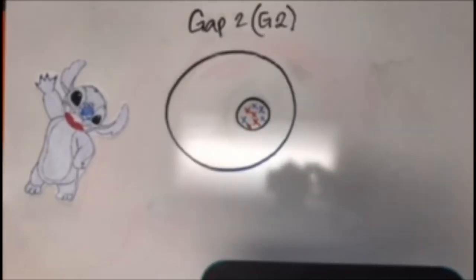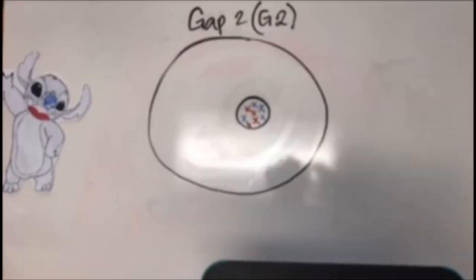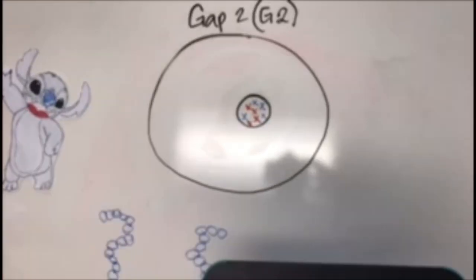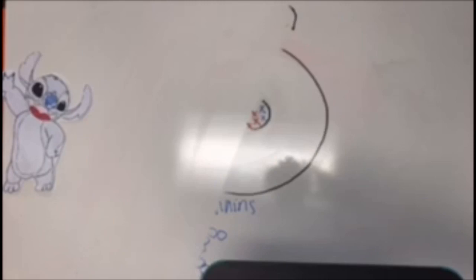The next and last stage of interphase is gap two, or G2. During this stage, the cell prepares itself for mitosis by growing rapidly and producing proteins. Cellular organelles such as the cell membrane within the cell also grow.